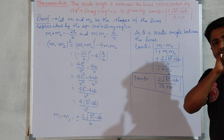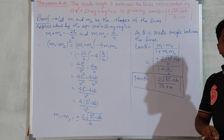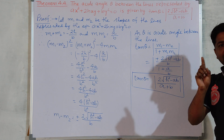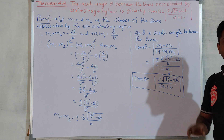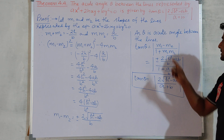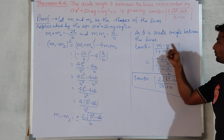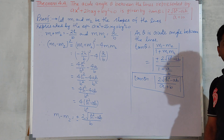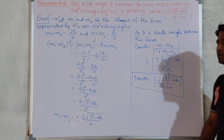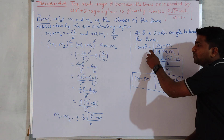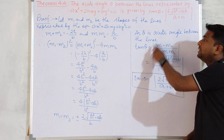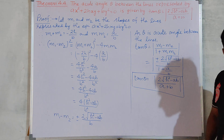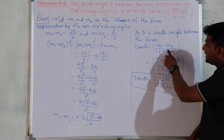We have already seen in the pair of straight lines the angle between two lines formula: tan θ = mod of (m1−m2) upon (1+m1·m2). This formula will help us derive the acute angle formula.